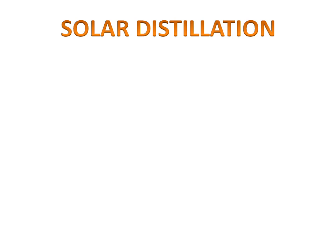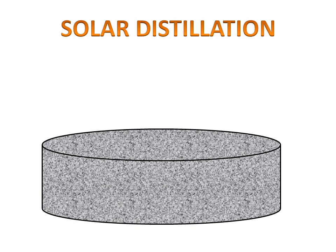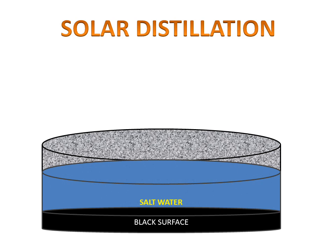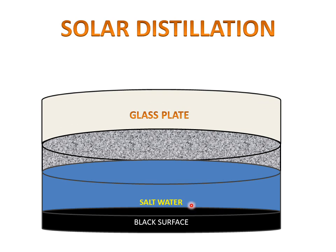Firstly we will discuss about the parts of the solar distillation. We have a cemented container whose below surface is black in color for absorbing the radiations. In this container we have salt water, and this is covered with a glass plate so that the energy enclosed in this container will not lose outside.